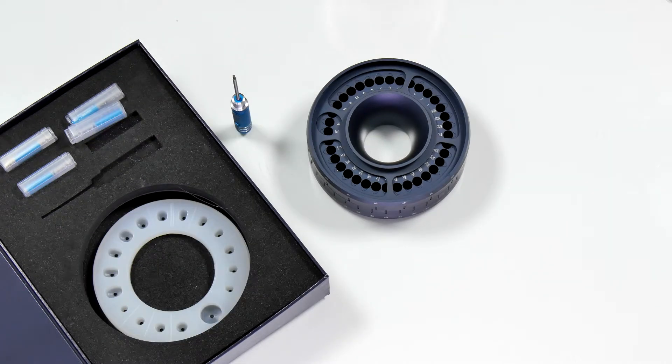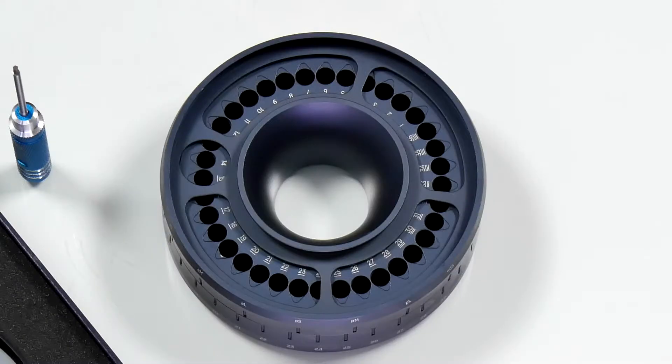If you look at the base of the mold, you will see 36 open sockets. These sockets receive the VPI prosthetic connection inserts.